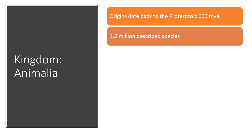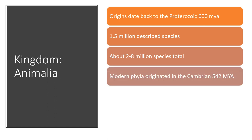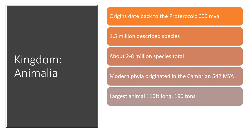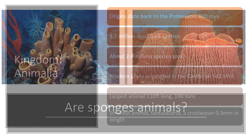Today we have about 1.5 million described species, but estimates put the true number closer to 2 to 8 million, meaning there's a lot yet to be discovered. Most modern phyla — including echinoderms and chordates — evolved during the Cambrian, between 542 and 485 million years ago. The largest animal is the blue whale at 110 feet and 190 tons, while the smallest are tiny crustaceans at just 0.3 millimeters. Animals span an enormous range in size.